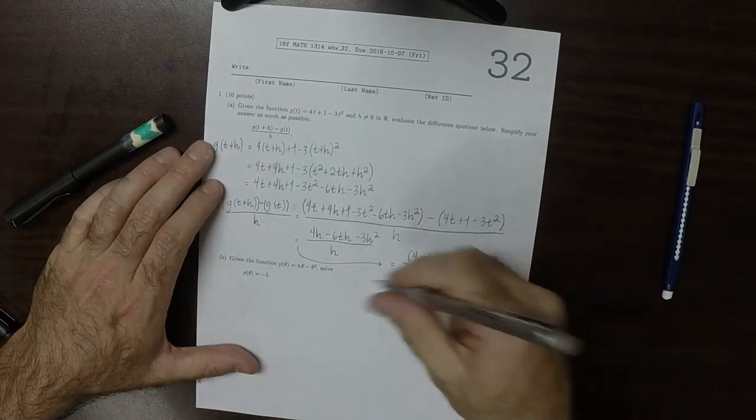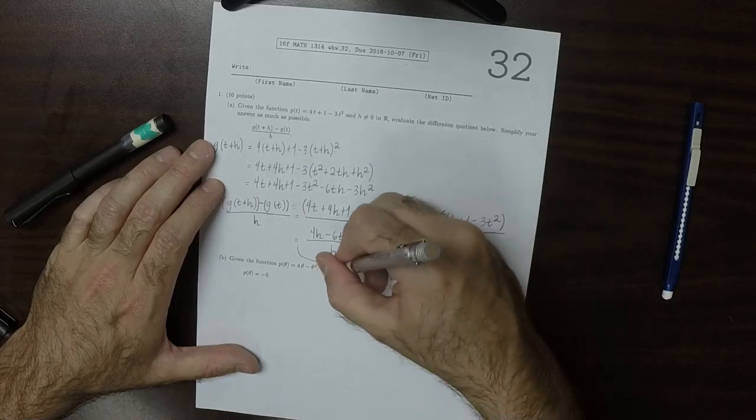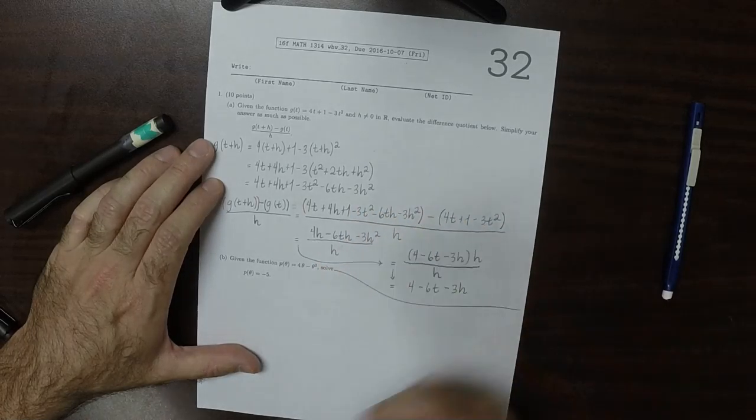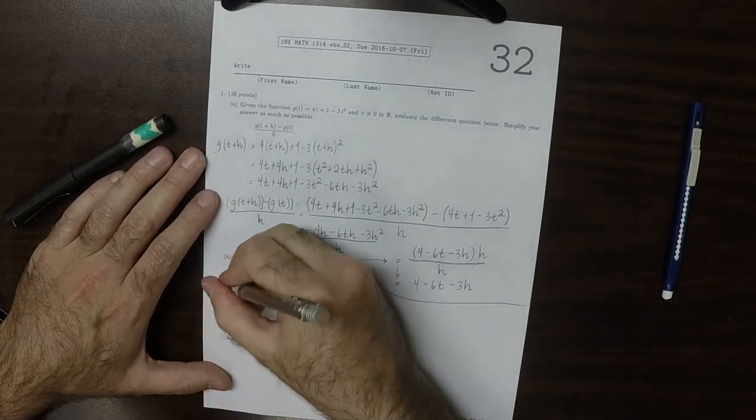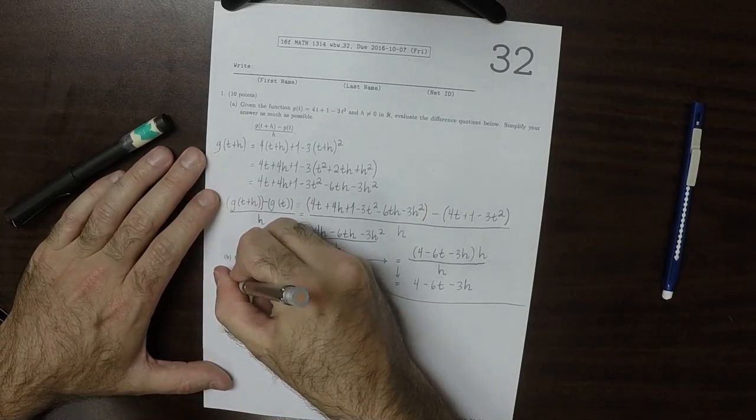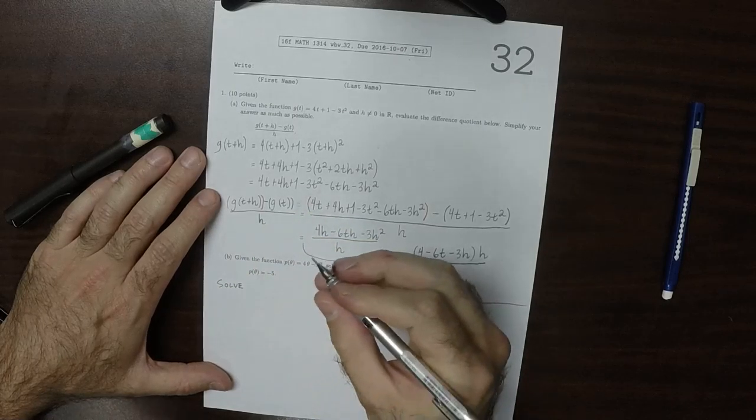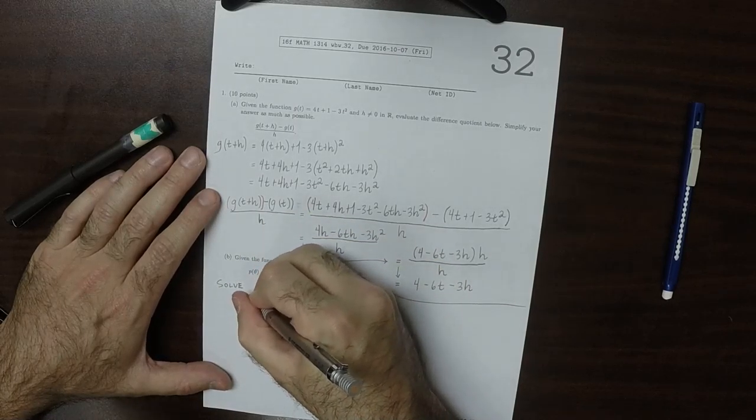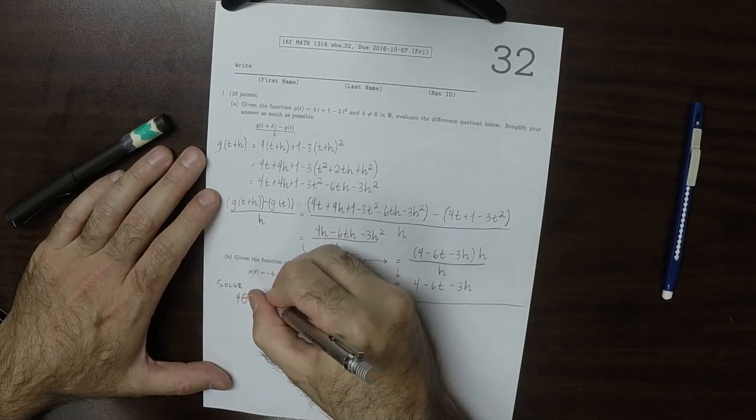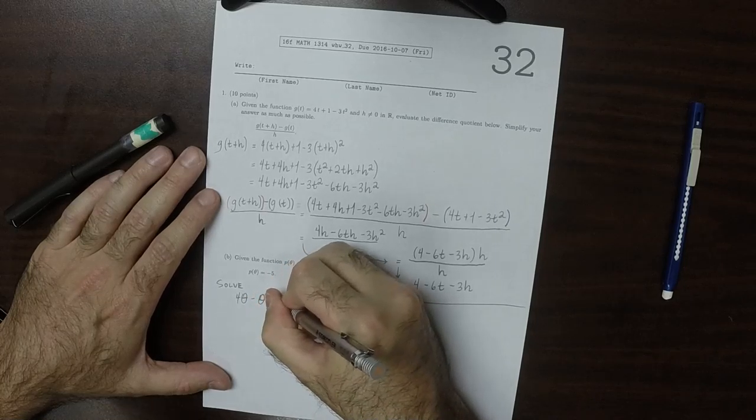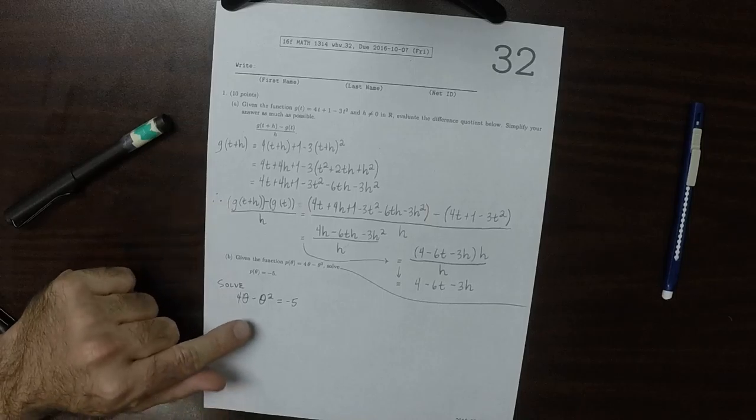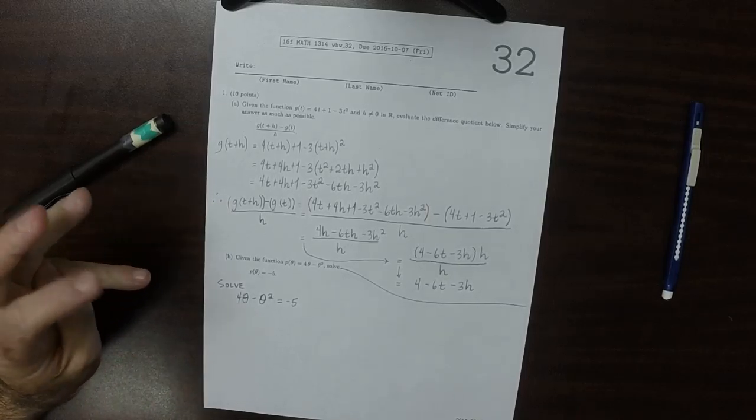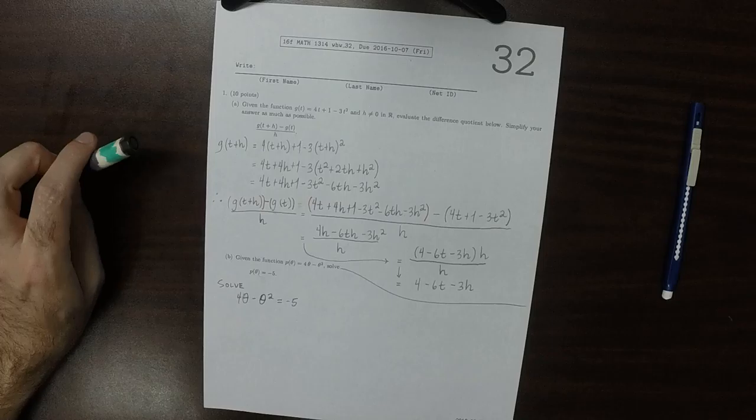Okay. So solving part b, we're asked to solve 4θ - θ² = -5. Now, some students have a little bit of a panic when they see theta, but it's just a symbol.